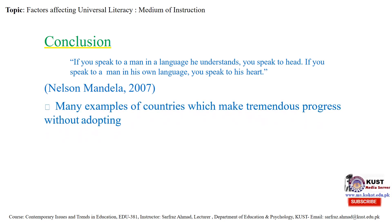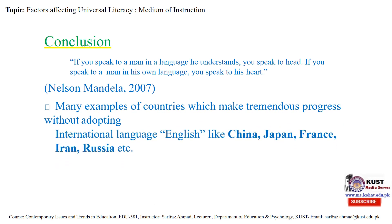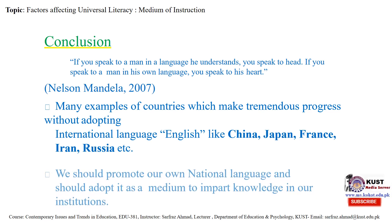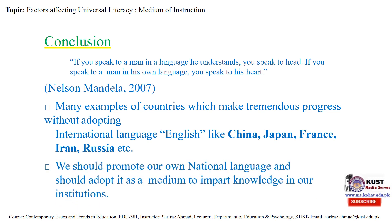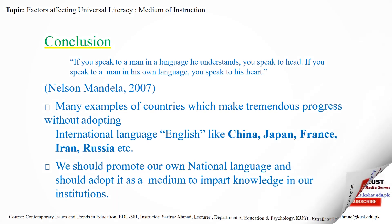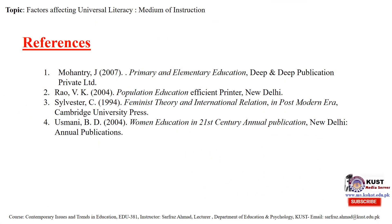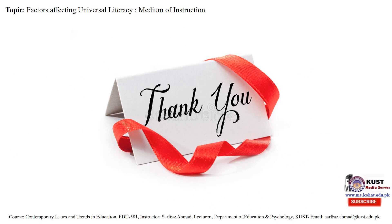There are many examples of countries that have made tremendous progress without adopting English as an international language, such as China, Japan, France, Iran and Russia. Although they did not adopt English, they are more advanced in their development. We should therefore promote our own national language and adopt it as the medium to impart knowledge in our institutions. Thank you very much for being with me. Stay blessed. Allah Hafiz.